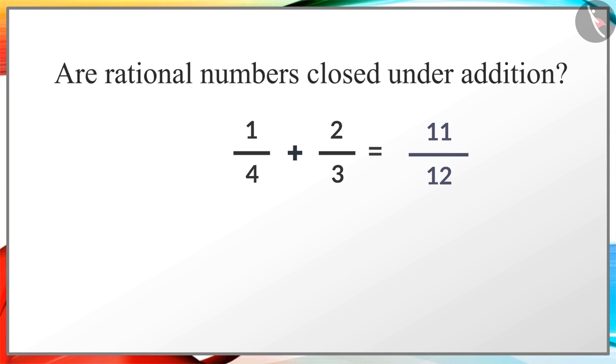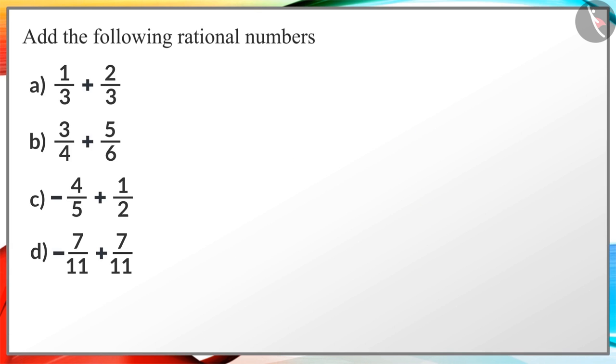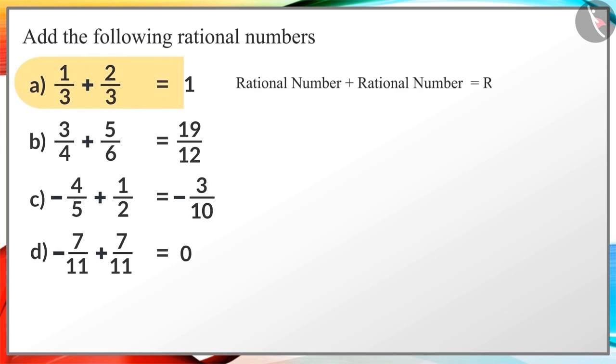Children, is this also a rational number? Yes sir, it is a rational number. Children, now add the following rational numbers and observe the result. Children, you will see that adding any two rational numbers gives another rational number, because rational numbers are closed under addition.